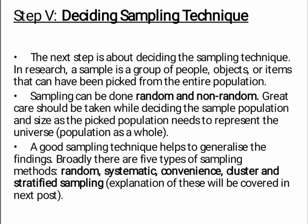Broadly, there are five types of sampling methods. They are random, systematic, convenient, cluster, and stratified sampling.